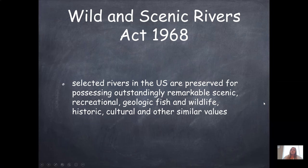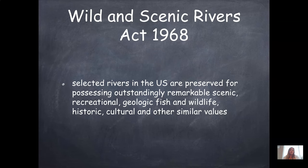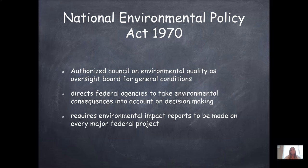The Wild and Scenic Rivers Act of 1968 helps preserve specific rivers selected in the United States for their remarkable scenic, recreational, geologic, fish and wildlife, historic, cultural, or other value. This was to protect them not just from pollution but also to preserve their scenic views, recreational use, or geologic significance — any sort of value that Congress wanted to see preserved.